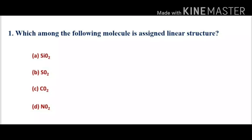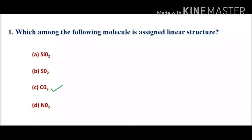Then option C, CO2. It has equivalent SP hybridization in opposite directions, so it has a linear structure — option C is the correct option. The last option D, NO2, has one lone pair at the center; nitrogen and one oxygen are bonded through a double bond and another oxygen with a single bond, giving three electron pairs, so its geometry is trigonal planar. The correct answer is option C, CO2.